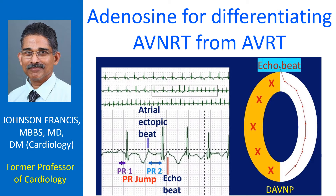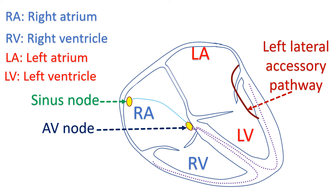The concealed accessory pathway takes part in the retrograde limb of reentry in AVRT. Sometimes pre-excitation is not evident in the ECG because of relative competing conduction velocities between the AV nodal pathway and accessory pathway. Similarly, it may not be manifest because the accessory pathway is far away from the sinus node, as in a left lateral pathway.